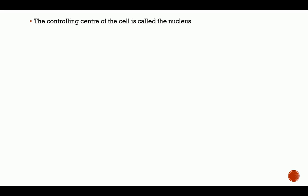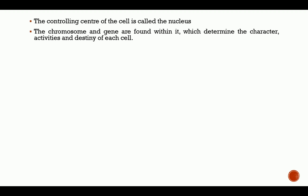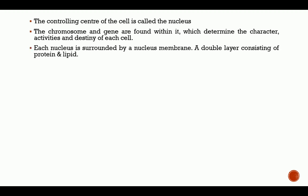The nucleus is the controlling center of the cell. The chromosomes and genes are found within it, which determine the character, activities, and destiny of each cell. Whatever a cell is going to be is determined by what the chromosomes carry. Whether it will divide and what kind of daughter cell it will form is determined by the nucleus.